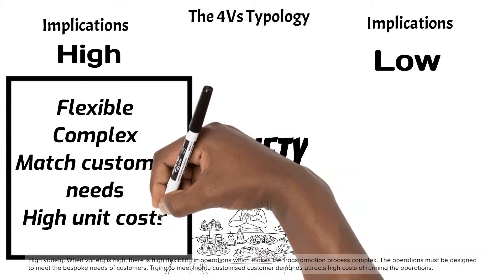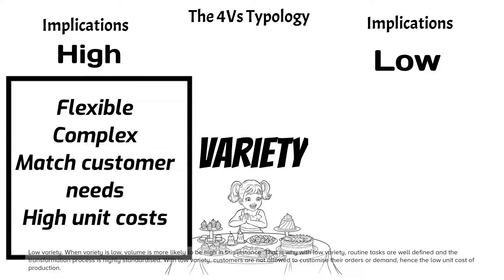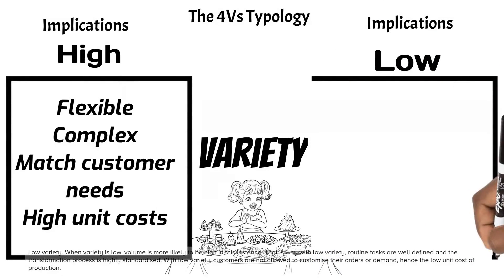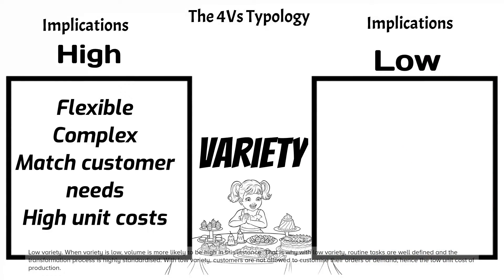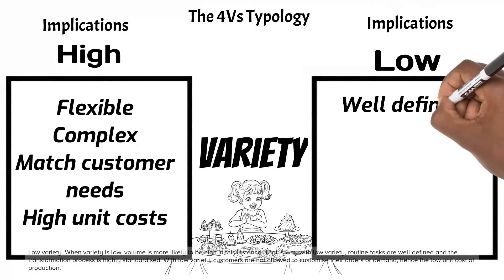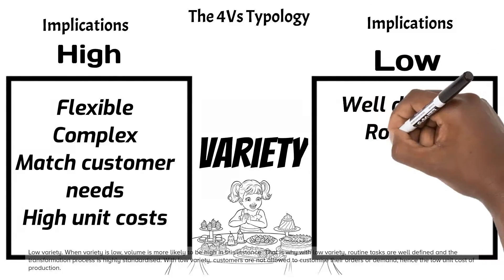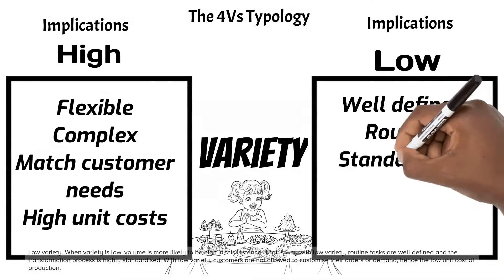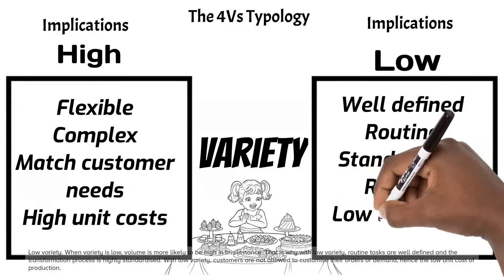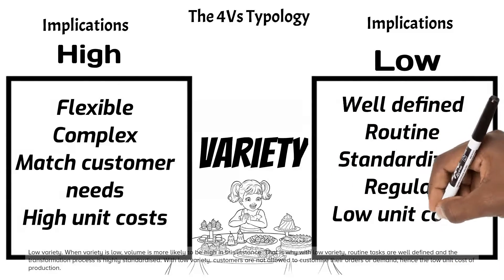Low variety: when variety is low, volume is more likely to be high. That is why with low variety, routine tasks are well defined and the transformation process is highly standardized. With low variety, customers are not allowed to customize their orders or demand, hence the low unit cost of production.